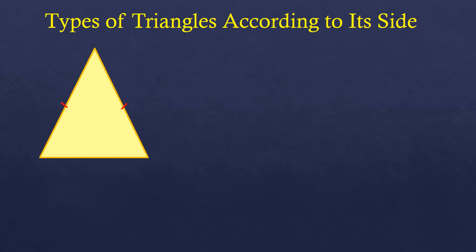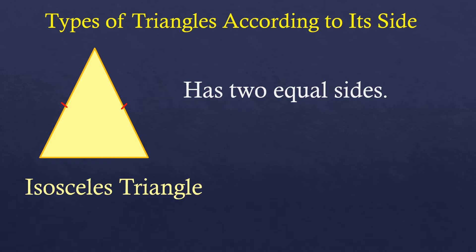Now if it's like this, it has two equal sides, then we call it an isosceles triangle.